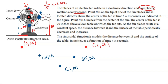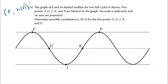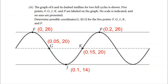This traces out a cosine curve starting at its max, going to the midline, dropping to its min, returning to the midline, and back up to its max. I create that graph on my own before labeling the given points. So: F = (0, 26), G = (0.05, 20), J = (0.1, 14), K = (0.15, 20), and P = (0.2, 26). That's one full cycle of 0.2 seconds returning to the maximum of 26.